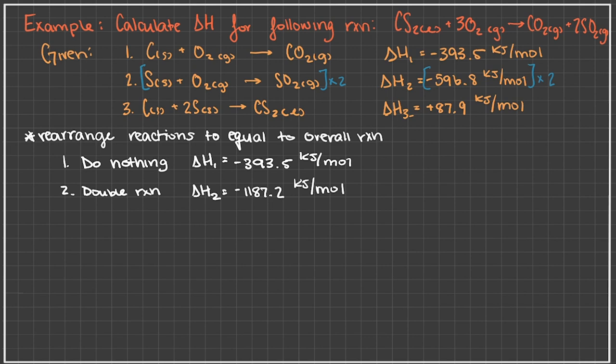For our third reaction we see that we have CS2 as one of our products. However, when it goes to the overall reaction that we need to equate we actually have CS2 as one of our reactants, so we need to flip our reaction. What that does is that's going to change the sign of our delta H3. So instead of it being positive 87.9 kilojoules per mole, that is going to be a negative 87.9 kilojoules per mole.